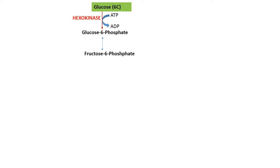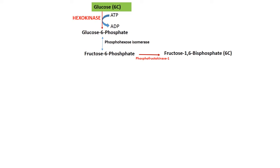The enzyme for that isomerization is phosphohexose isomerase. In the third step, fructose-6-phosphate is again phosphorylated to fructose-1,6-bisphosphate, and the enzyme is phosphofructokinase-1. The first step is irreversible — hexokinase, shown in red — and the third reaction with phosphofructokinase-1 is also irreversible. Among the three irreversible enzymes, two are already known.